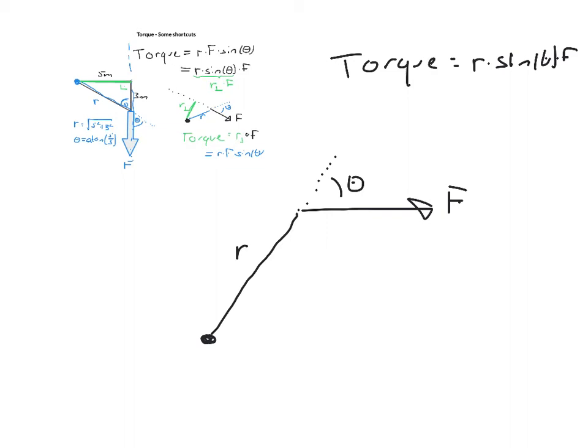Now, instead of doing torque is r times sine theta times F, I am now regrouping sine theta times F. Basically, I am regrouping this part here. If we go and draw here another triangle, this line here is my F perpendicular.